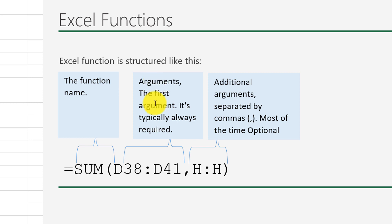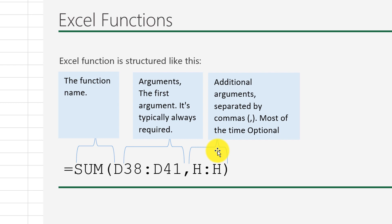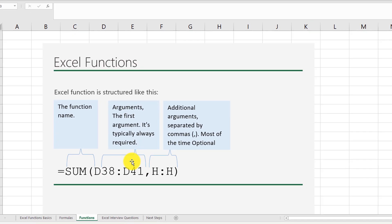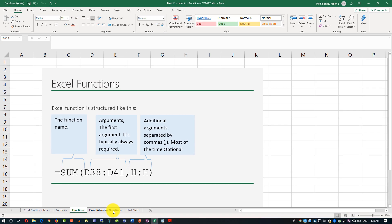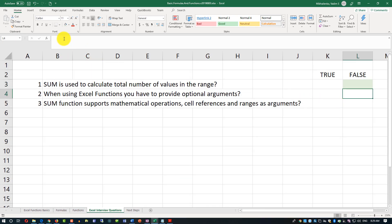I'll highlight the answer false in green. Question two: 'When using Excel functions, you have to provide optional arguments.' The answer is also false. Functions have two types of arguments: mandatory arguments, which appear first and must be supplied, and optional arguments, which come after and do not have to be supplied.